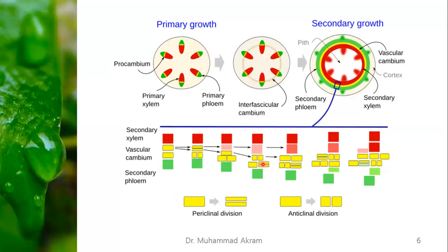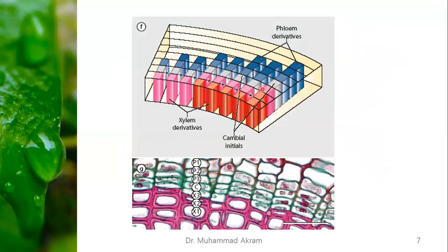Both periclinal and anticlinal divisions form vascular bundles. In this way, the number of cells increases with the increasing number of cells of the vascular cambium, and the girth as well as length of the dicot stem also increases. This photograph shows the vascular cambium initials that produce xylem derivatives towards the inside of the stem and phloem derivatives towards the outside of the stem, also showing the position of the cambium.